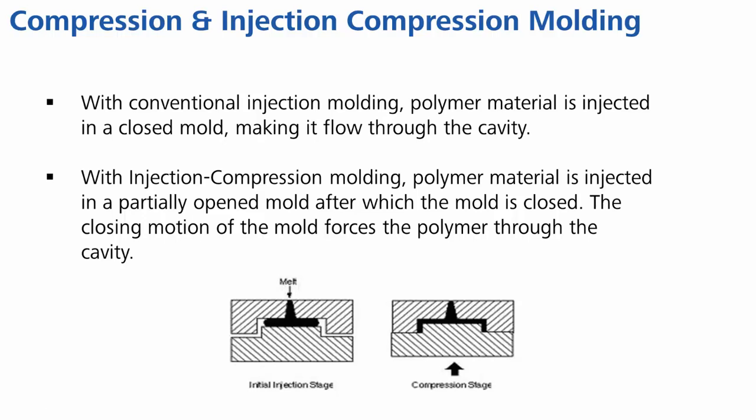Compression molding is a variation of this process, whereby the plastic is not injected but placed in the mold cavity. Again, the closing action will force the material to flow through the cavity. The size and placement of these so-called charges will greatly influence how the part is formed.